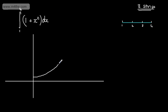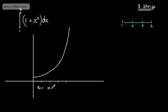Here's the curve 1 plus x squared — it's a standard parabola with y-intercept at (0, 1). We label x₀ = 1, x₁ = 2, x₂ = 3, and x₃ = 4. These are the coordinates 1, 2, 3, and 4 along the x-axis.